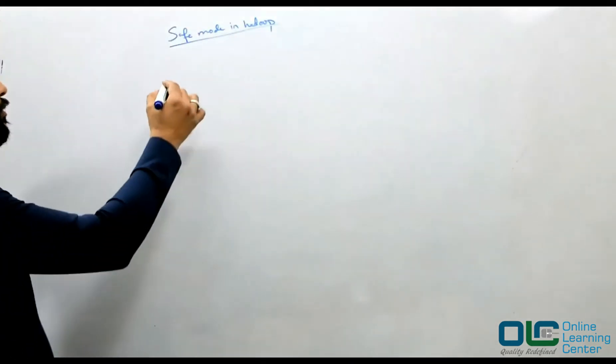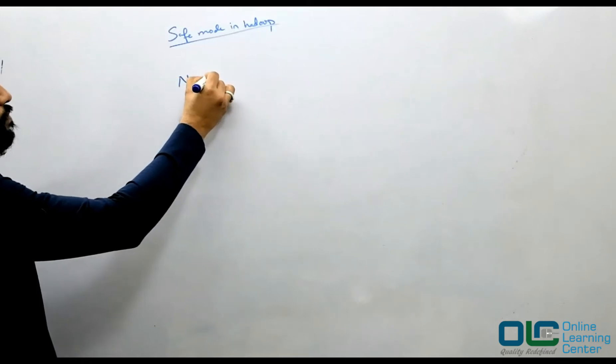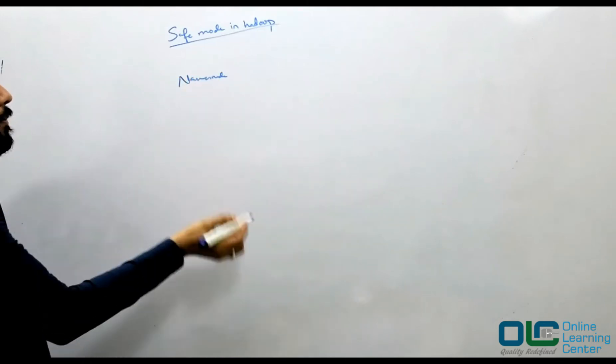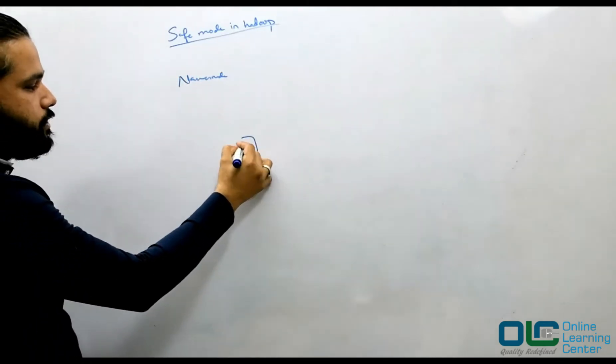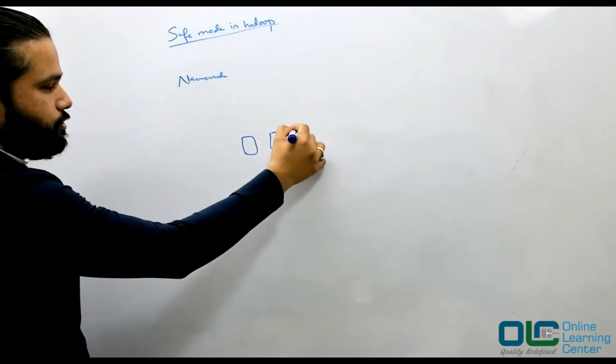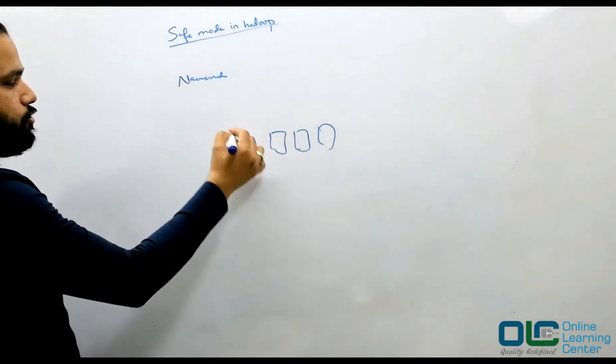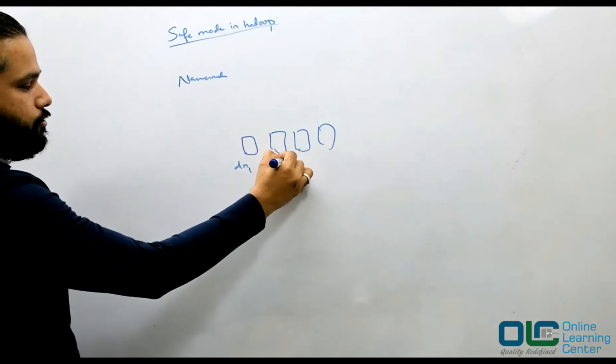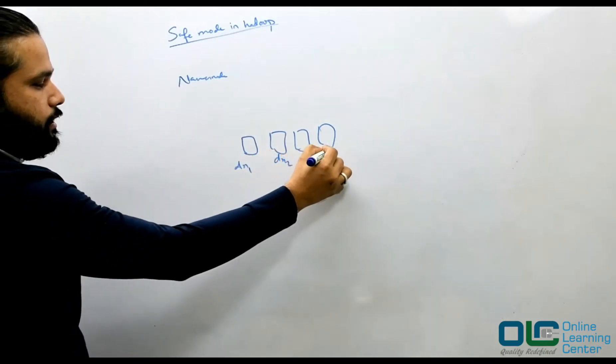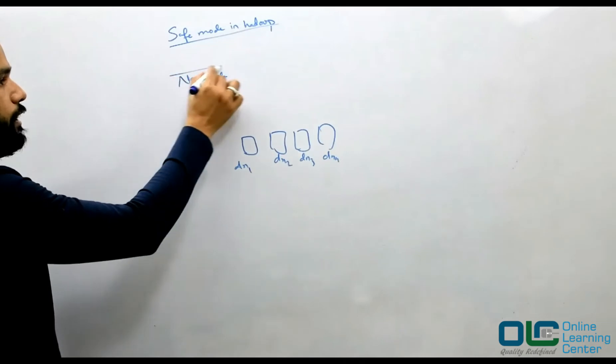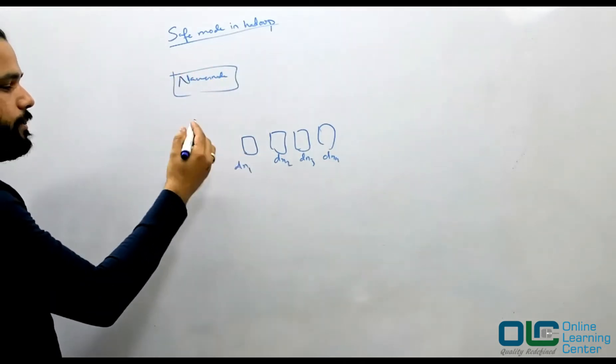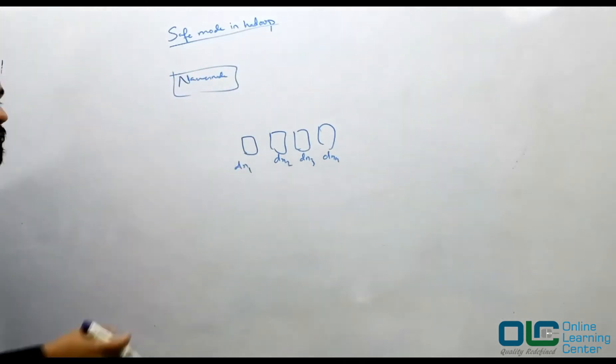Your name node would be collecting more information from all your active data nodes. So you have all the data nodes - data node 1, data node 2, data node 3, data node 4, and so on. So your name node will get all the information, the updated information from the data node.